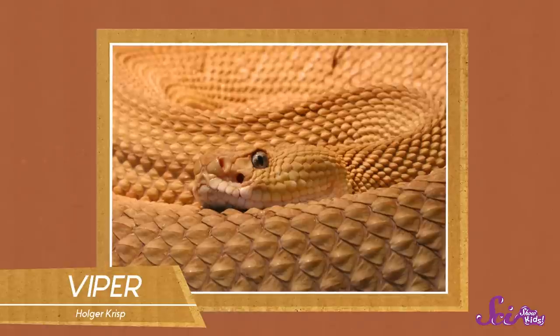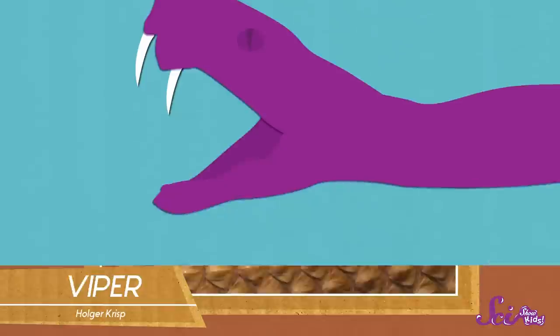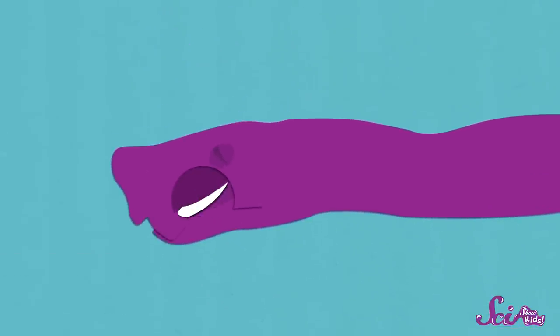Other predators have different kinds of teeth for catching food. Vipers, for example, are a kind of snake, and they have fangs. When a snake is resting, these special teeth fold up inside its mouth so that they're out of the way.